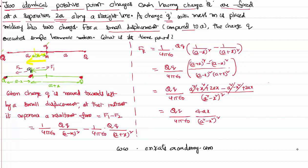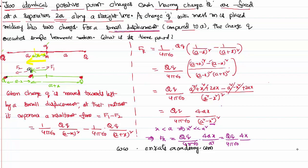The condition given is small displacement, meaning x is much smaller than a. So x² is much smaller than a², and we can ignore x² in the denominator. The (a²−x²)² approximates to a⁴. Therefore F_resultant = (Qq/4πε₀) × 4ax/a⁴ = (Qq/4πε₀) × 4x/a³, which simplifies to F_resultant = Qq/(πε₀) × x/a³.